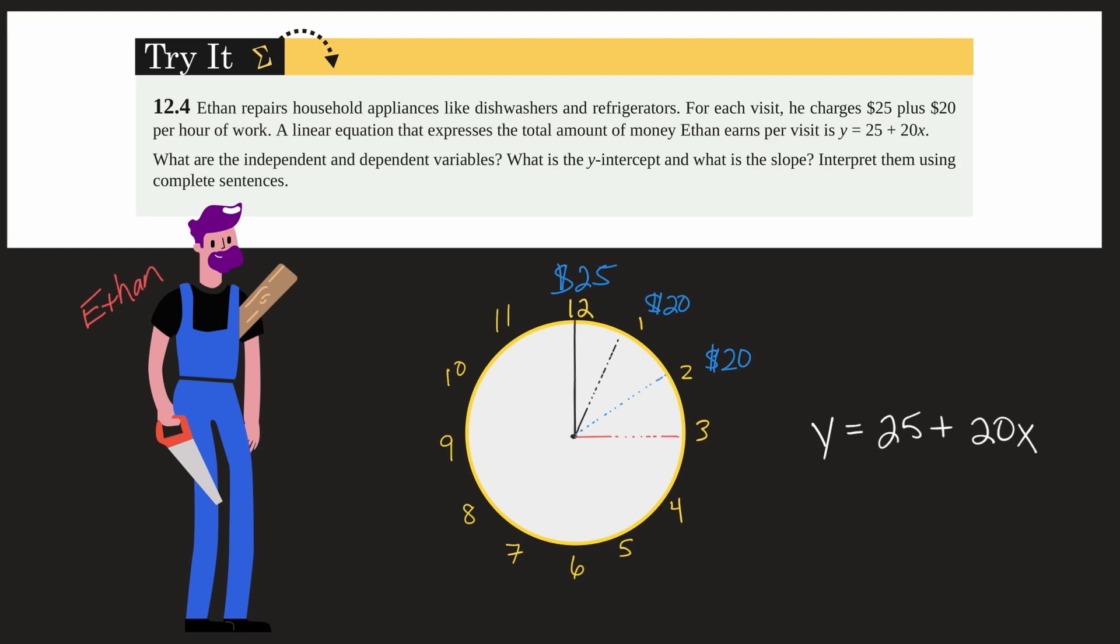Now the first question is, what are the independent and dependent variables? Well, what is changing here? What depends on what? Well, the amount of money he earns is the dependent variable.